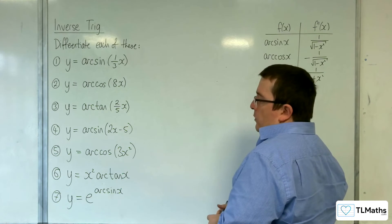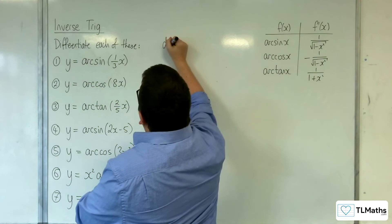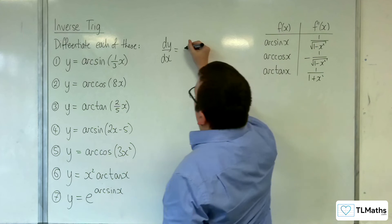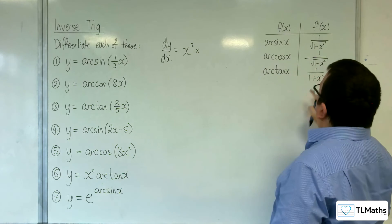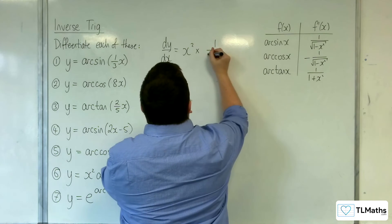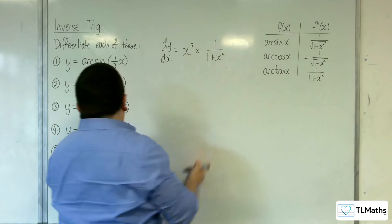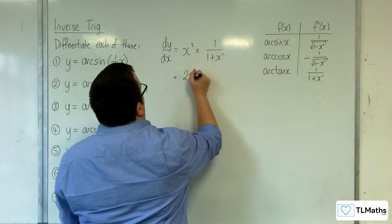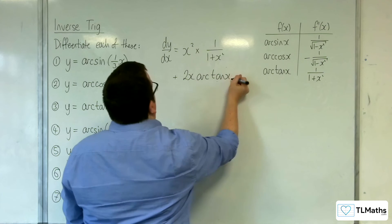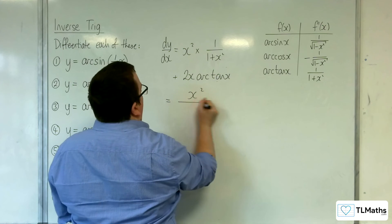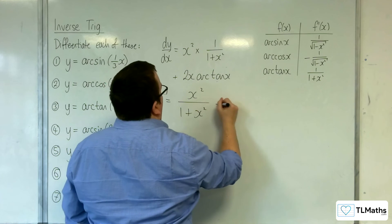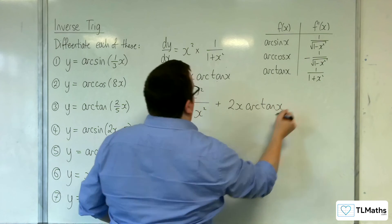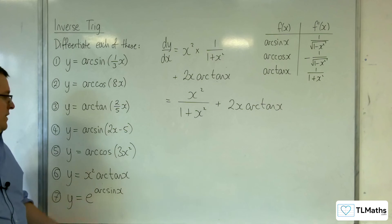Number six: y equals x squared times arc tan of x. This uses the product rule since we have the product of x squared and arc tan x. First times derivative of the second: x squared times one over one plus x squared; plus second times derivative of the first: arc tan x times two x. So the derivative is x squared over one plus x squared plus two x arc tan of x.